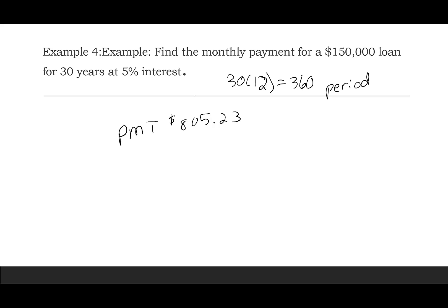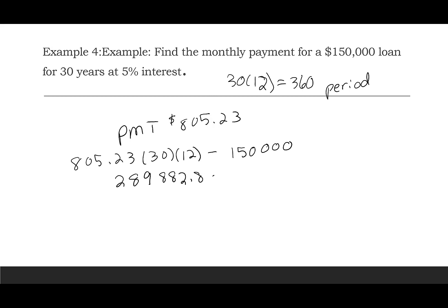To find the interest paid: total repaid minus amount of loan. $805.23 × 30 × 12 = $289,882.80, minus $150,000 financed, gives $139,882.80 in interest. That's a lot more than a car loan — mainly because of the length of the loan. Financing over a longer period results in much more interest.